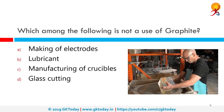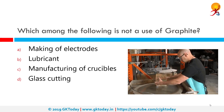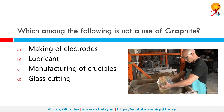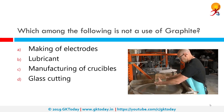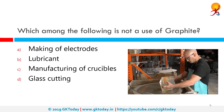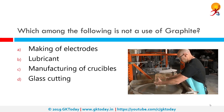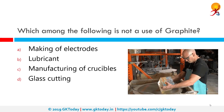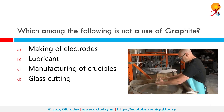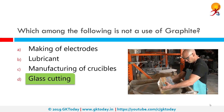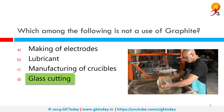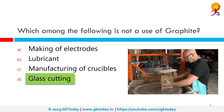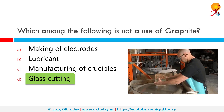Which among the following is not a use of graphite? Graphite is used for making electrodes — in batteries and similar applications. It is also used as a lubricant because it is very smoothening, and it is also used in the manufacturing of crucibles. The only place it is not used is glass cutting. Glass cutters usually have diamond, or in some cases hardened steel or tungsten carbide.